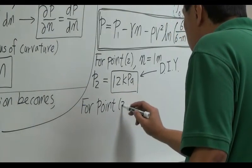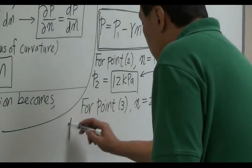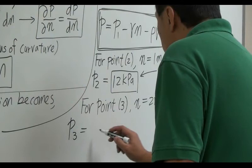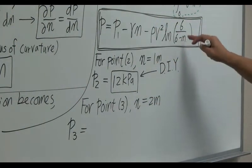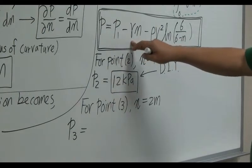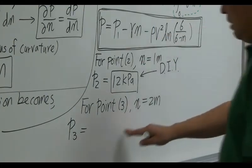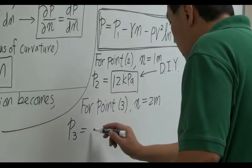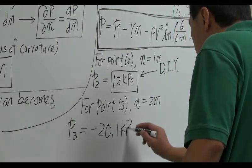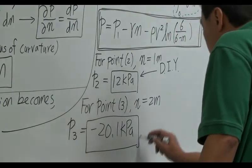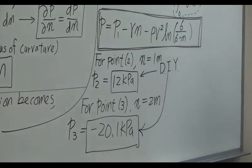For point 3, located at n = 2 meters: plugging in n = 2 meters — p₁ = 40 kPa, γ of water, density of water, velocity 10 m/s — you get p₃ = -20.1 kPa. Again, confirm this by yourself with your calculator.